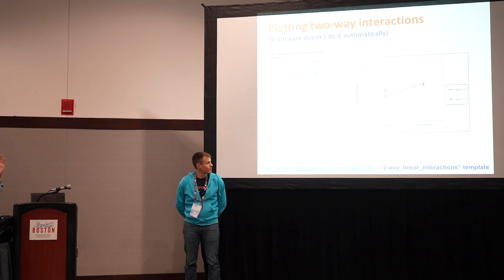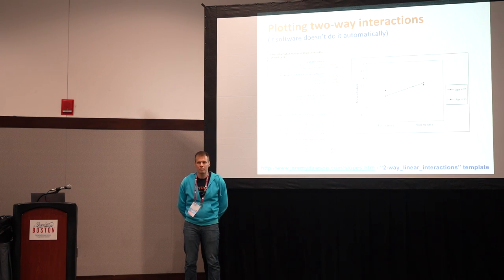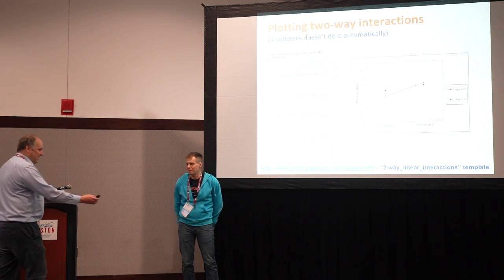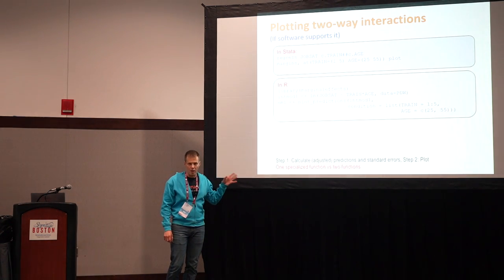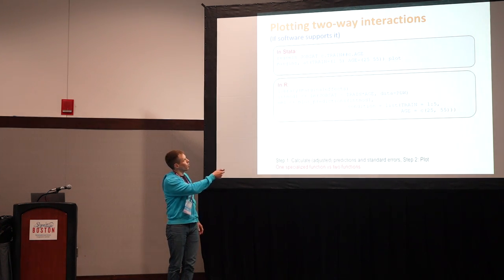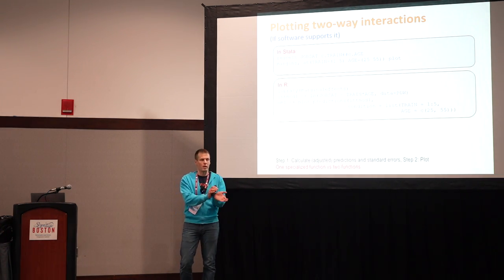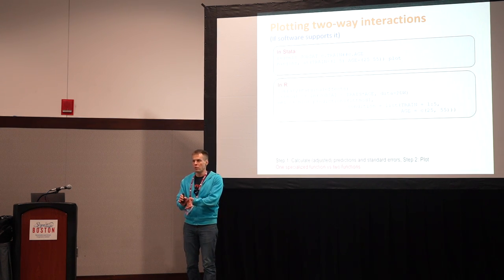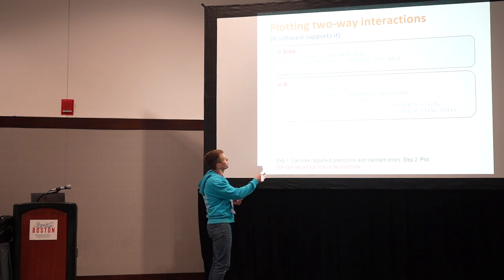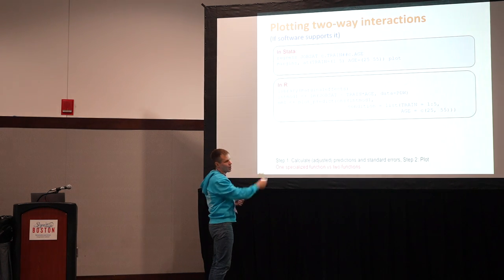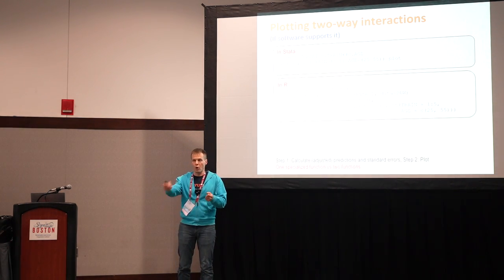This is a relatively straightforward way of plotting if you're using SPSS. But if you're using R or Stata, you can do it in a slightly simpler way. In Stata, the margins command with the plot option will calculate the four points needed—two values of each variable—and produce the plot, doing the calculation and plotting in one step.